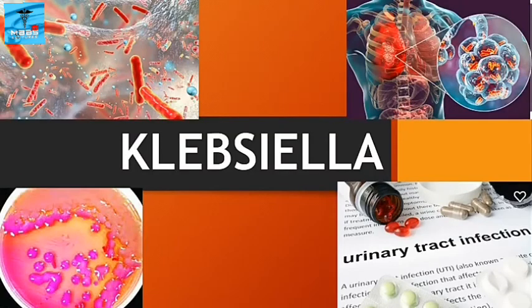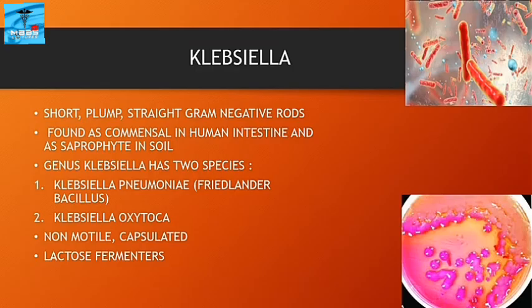Klebsiella. They are short, plump, straight gram-negative rods, and they are usually found as commensals in the human intestine and as saprophytes in soil.